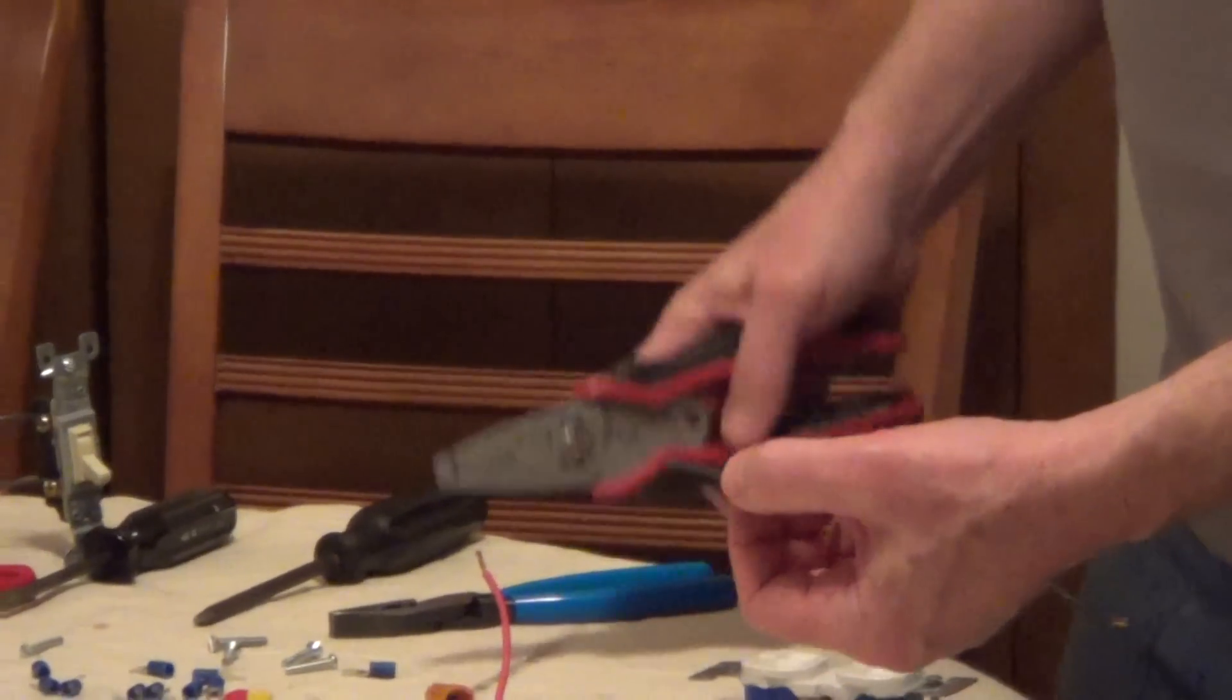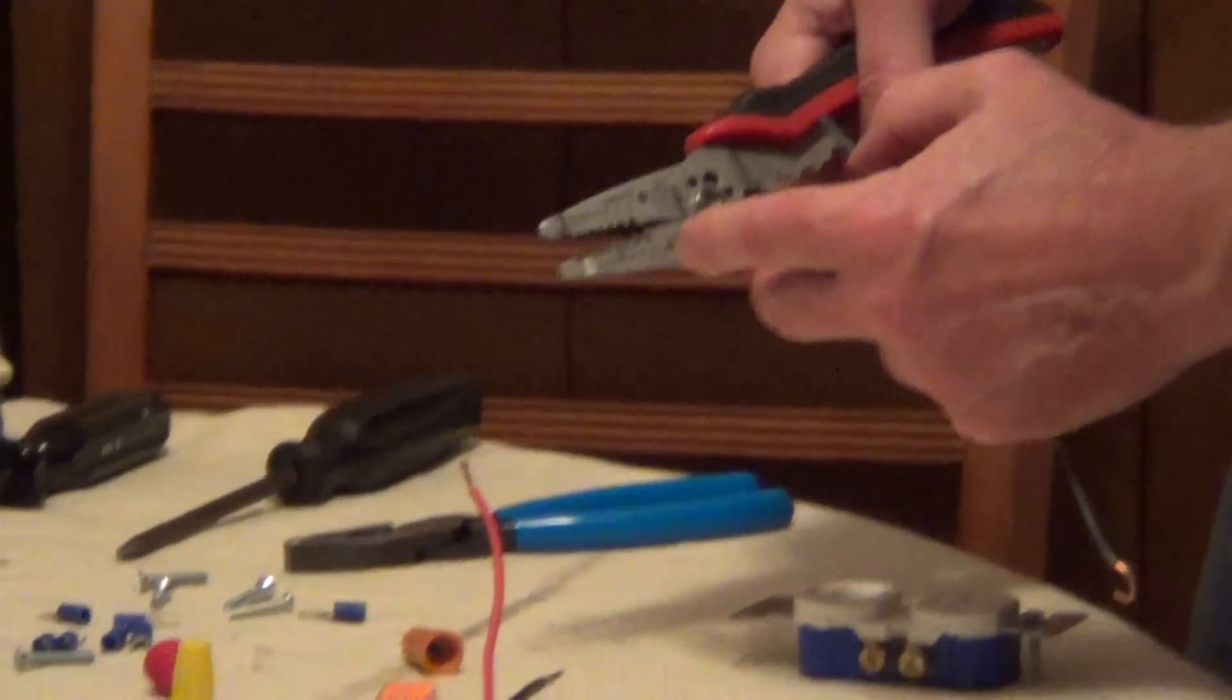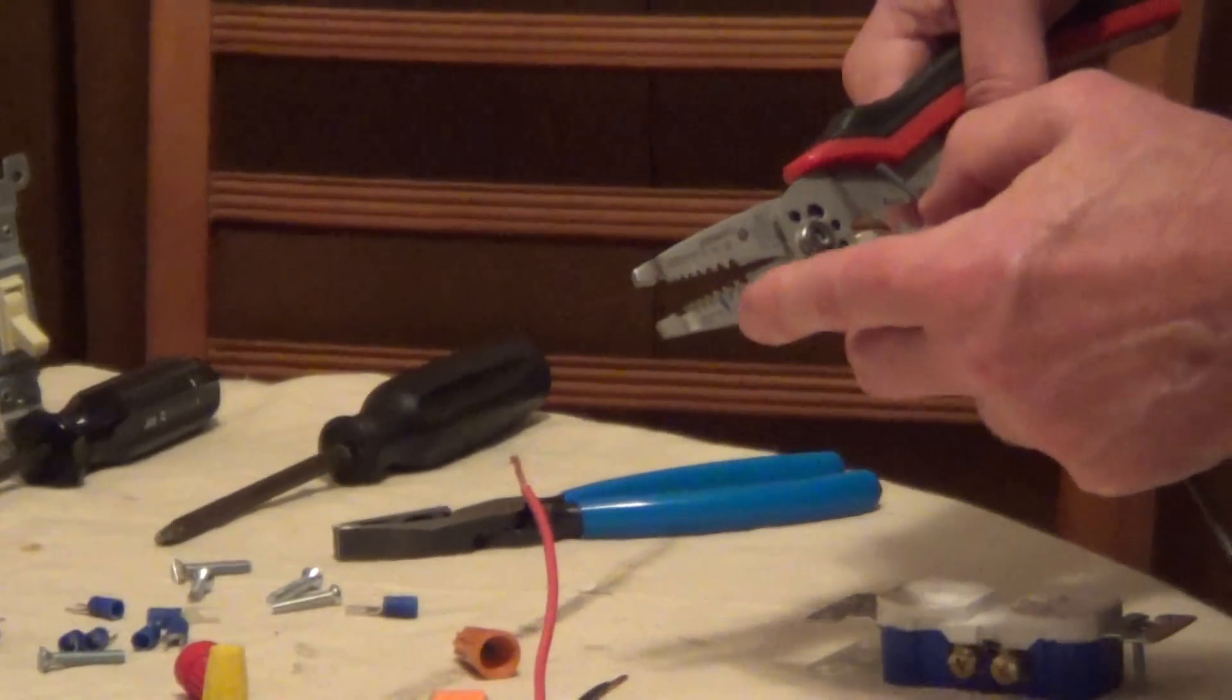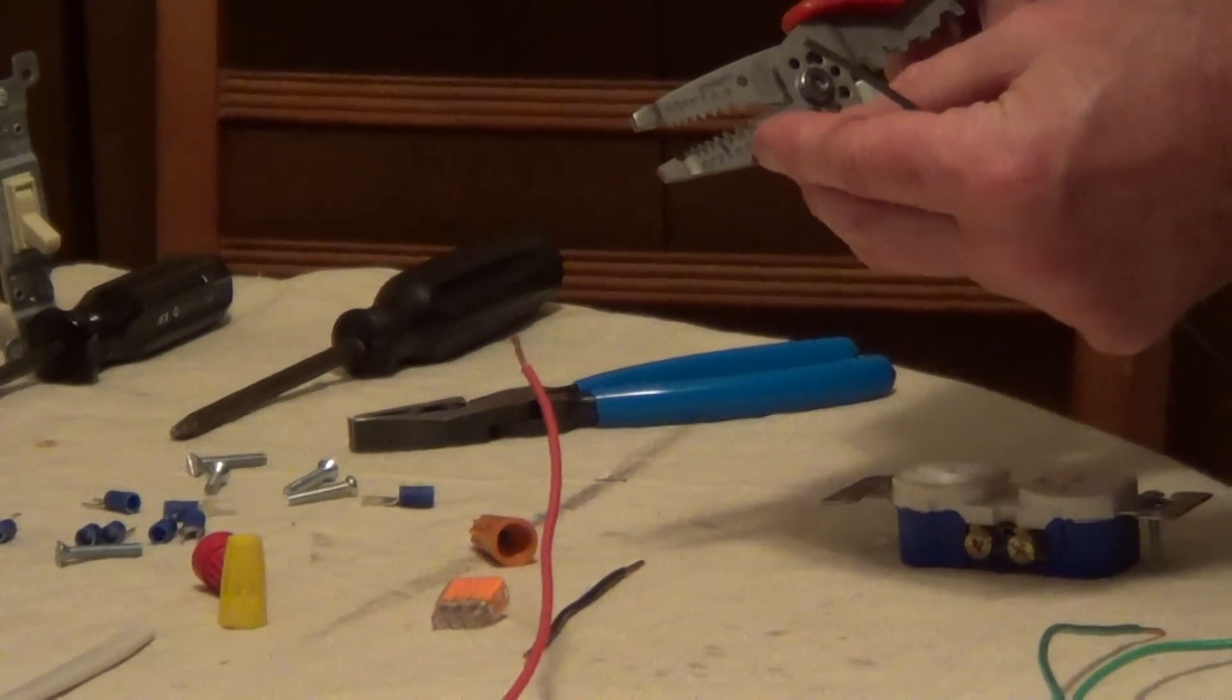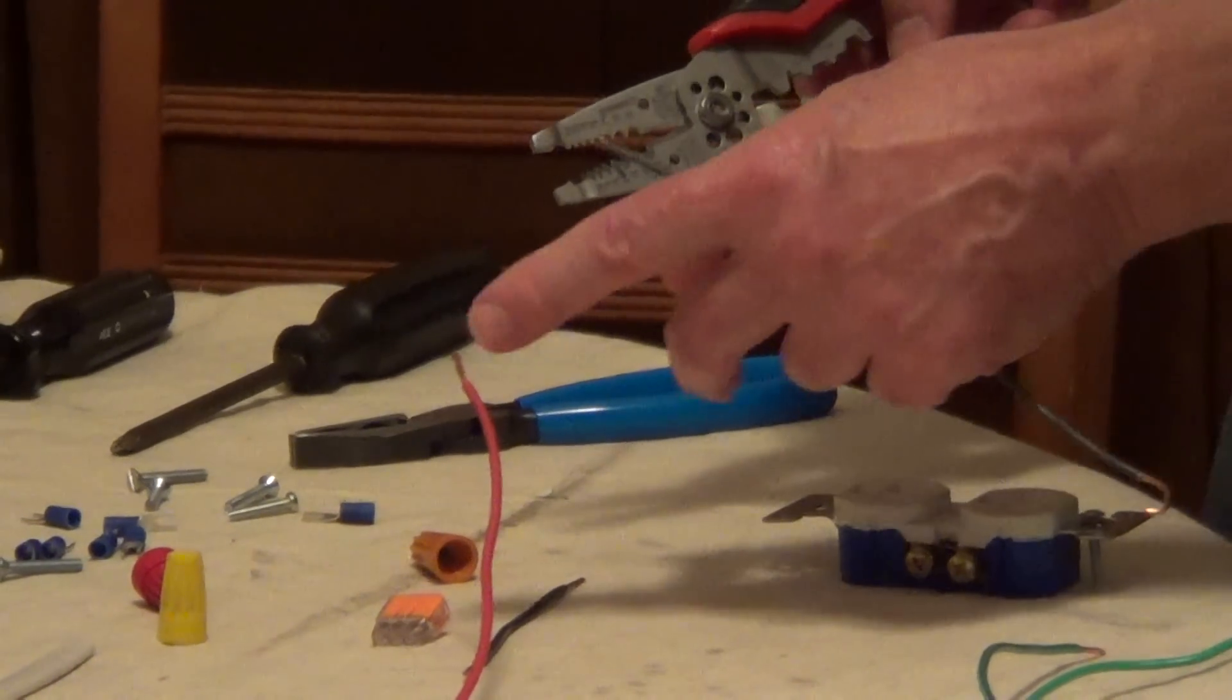So depending on what gauge you're using, for instance, this is 14 gauge, we would use the 14 notch to strip this. But if we were cutting the stranded wire, I would actually go up a notch to the 12 gauge and strip it so we don't cut into the wire.